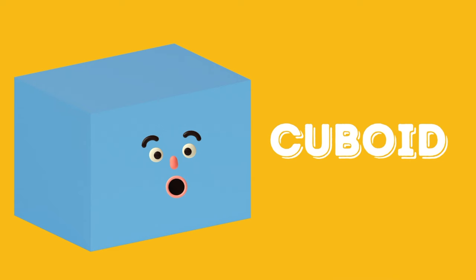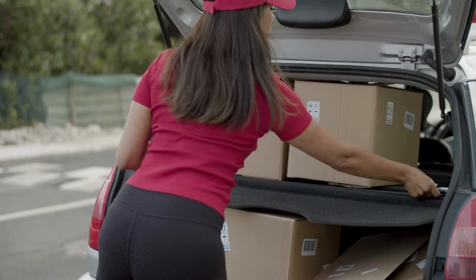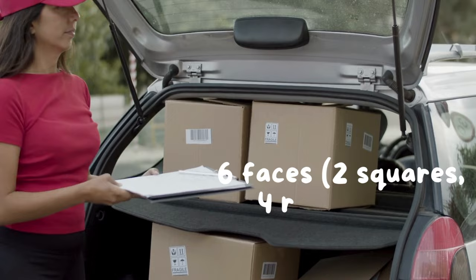This is a cuboid. It's like a stretched cube with 6 faces — 2 squares and 4 rectangles. It has 8 vertices and 12 edges.